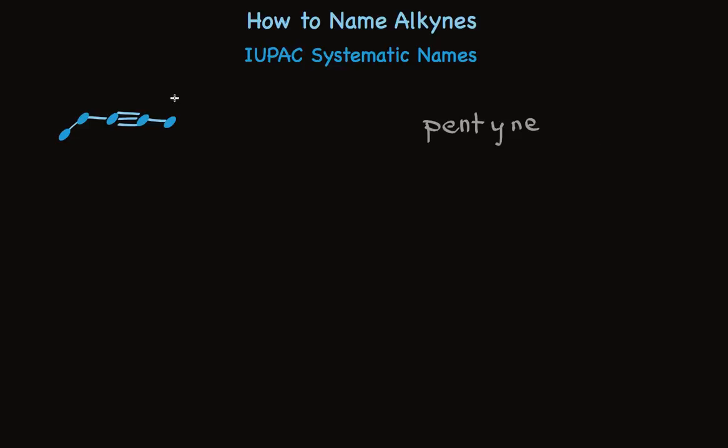There are no substituents to identify so we can go straight to numbering the carbon chain. We'll number from the end that's closest to the alkyne and put the number of the alkyne carbon that's closest to the end in front of the name. There's no more to do. This is 2-pentyne.